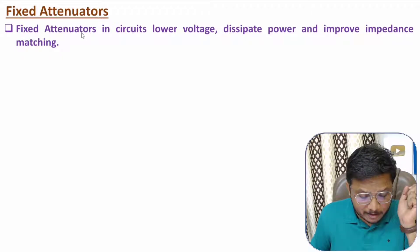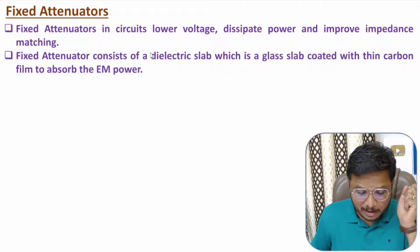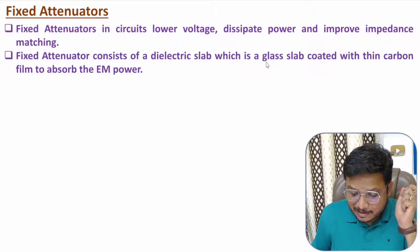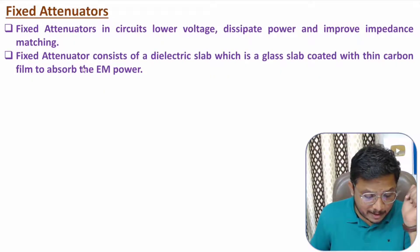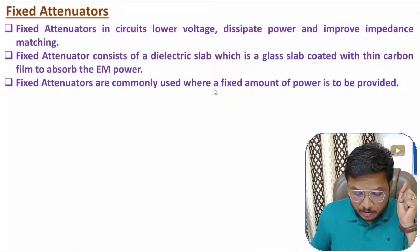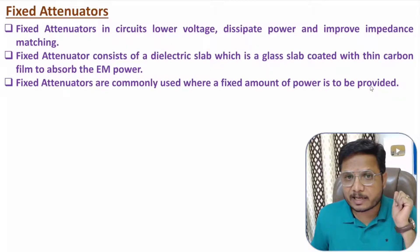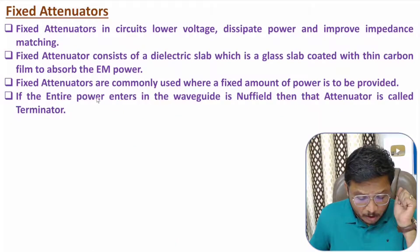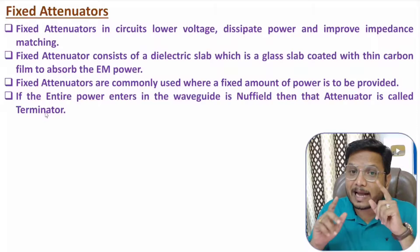The basic functions of a fixed attenuator in a circuit are: providing lowering of voltage, dissipation of power, and improving impedance matching. In a fixed attenuator, we have a dielectric slab — a glass slab coated with a thin carbon film — to absorb EM power. Fixed attenuators are commonly used where a fixed amount of power is needed. If the entire power is absorbed in the waveguide, then that attenuator is referred to as a terminator.